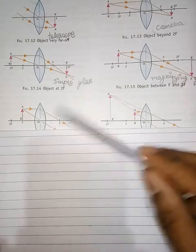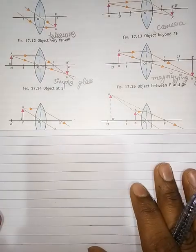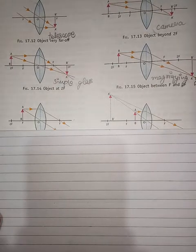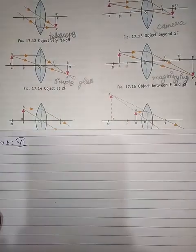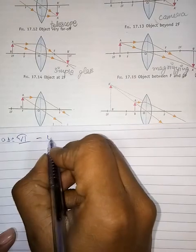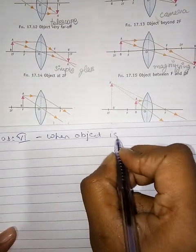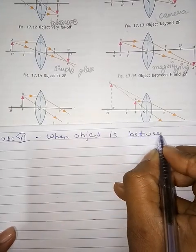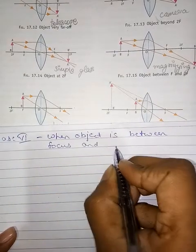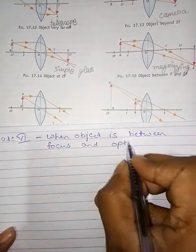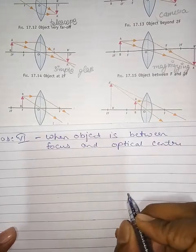Today we will discuss the sixth case study of convex lens — that is the last one. Case 6: when the object is between focus and optical center.